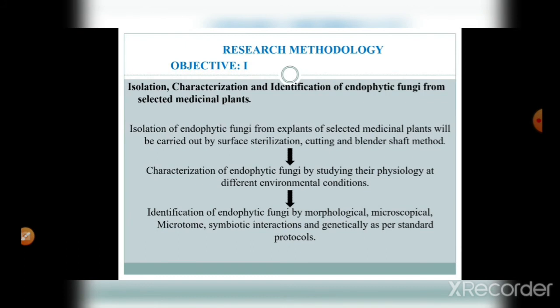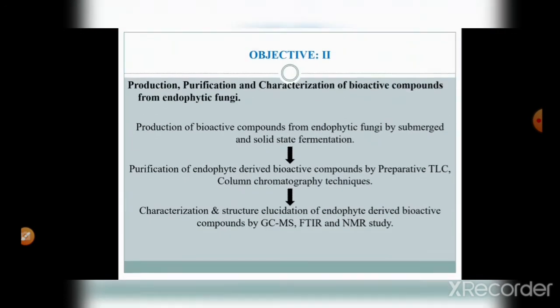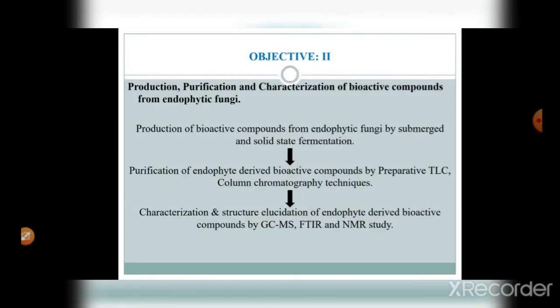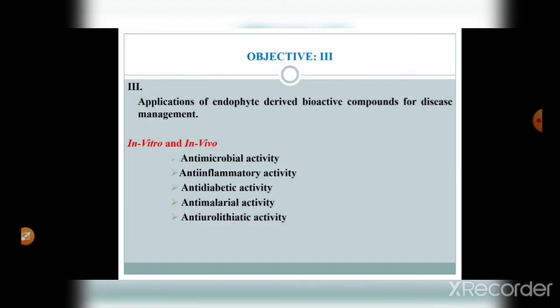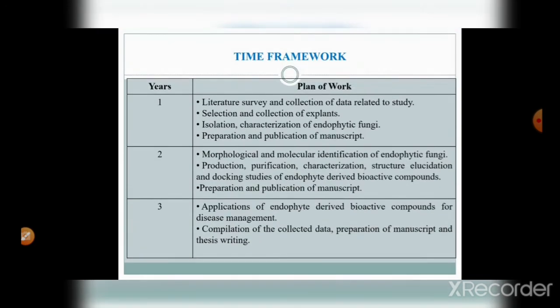For research methodology, we have to explain our objectives in detail. The first objective covers isolation and identification methods, the second objective covers production and purification methods, and the third objective covers applications — both in vitro and in vivo.